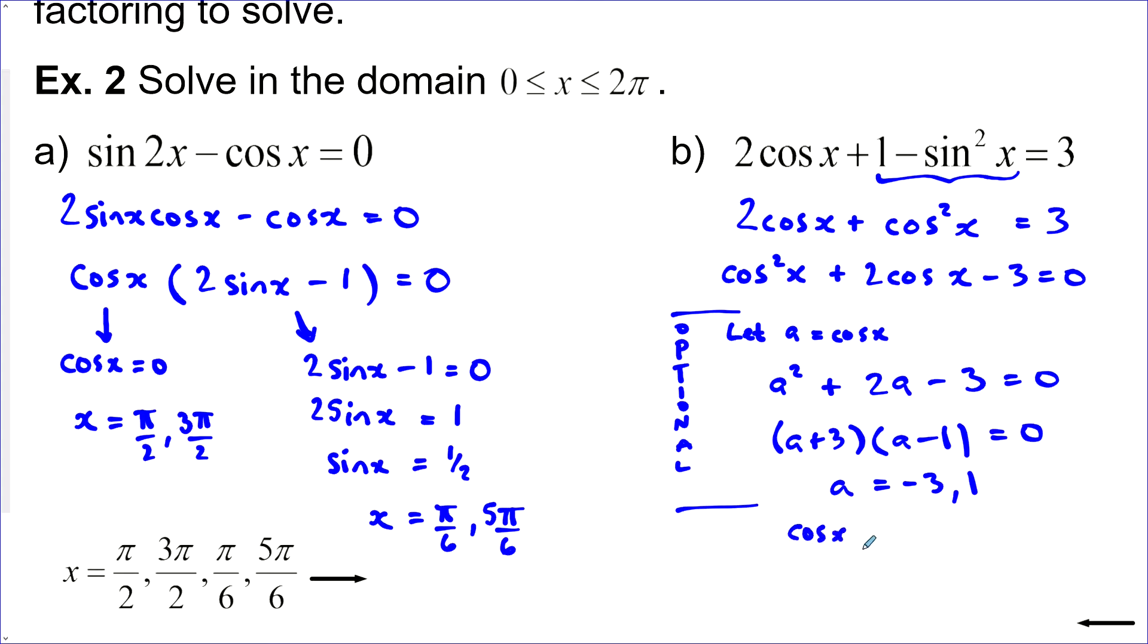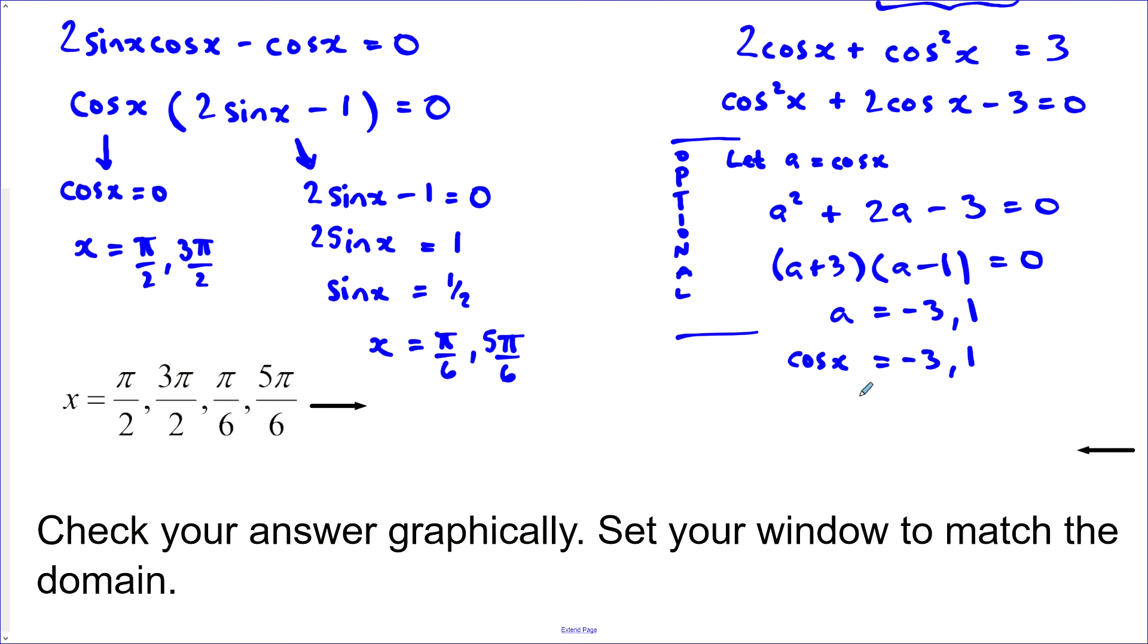So I actually have cos x equals negative 3 and 1. Now you can factor it without this substitution. You still need to factor it. But what's optional is subbing out the trig function for a. Now I've got two things here. I've got cos equals negative 3.